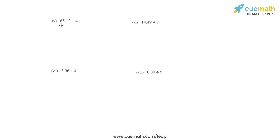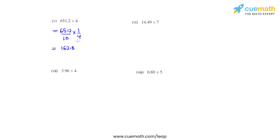In the fifth bit we have 651.2 which is to be divided by 4, so we can write it as 6512 divided by 10. Division is replaced with a multiplication sign and we write the reciprocal of 4, which is 1 over 4. When 6512 is divided by 4 we get 1628, which on division by 10 gives us the answer as 162.8.